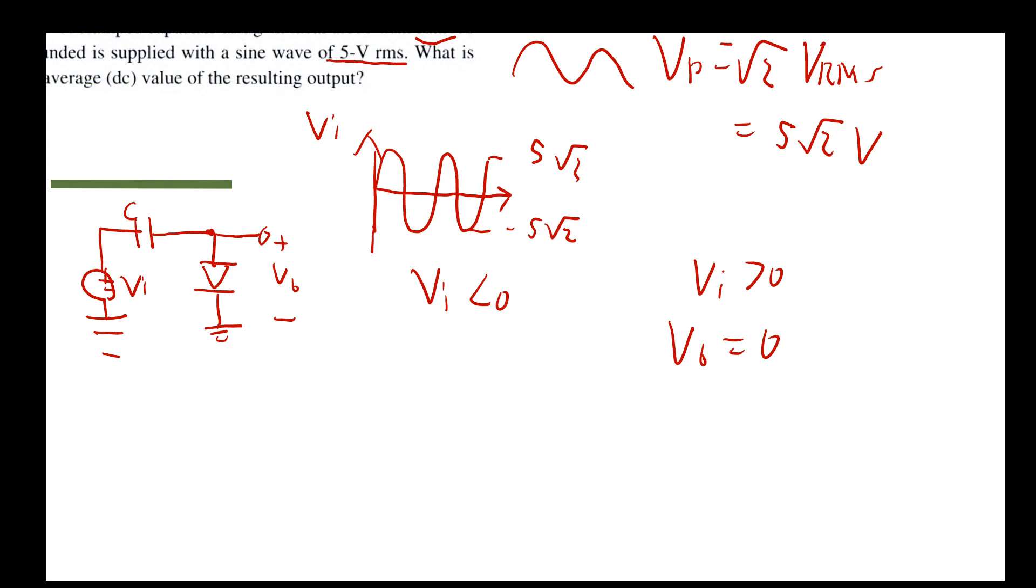But when VI equals negative 5 root 2, or if it's less than 0, then we see that the capacitor is discharging and will actually behave like a short. And we are going to receive the total negative voltage from both the input and this clamped capacitor.